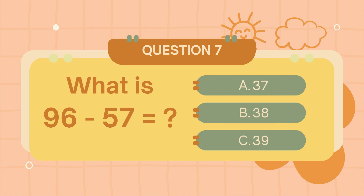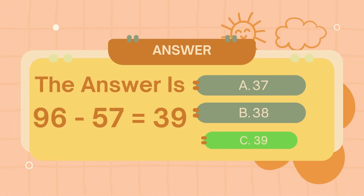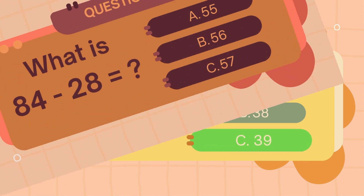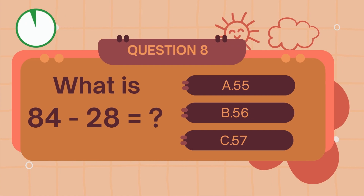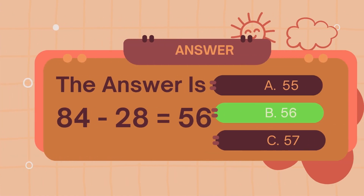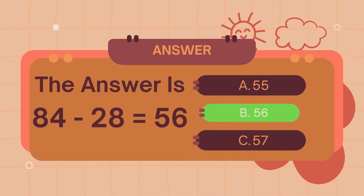What is 96 minus 57? The answer is 39. What is 84 minus 28? The answer is 56.